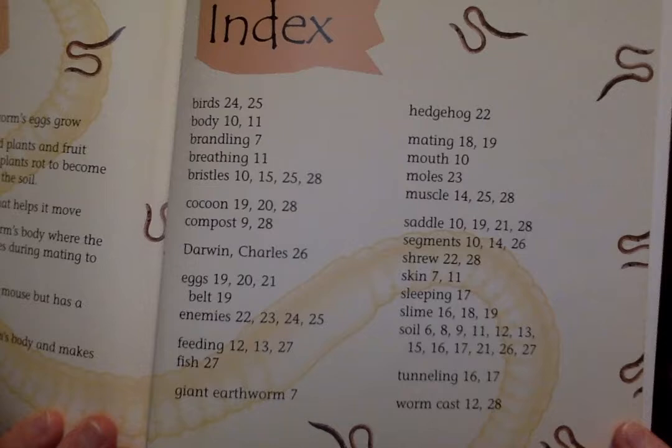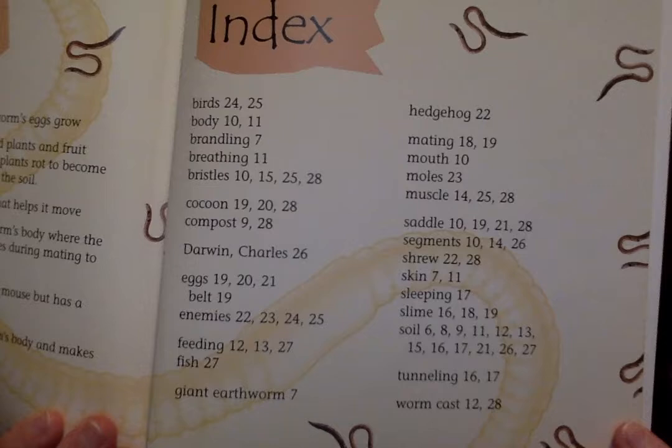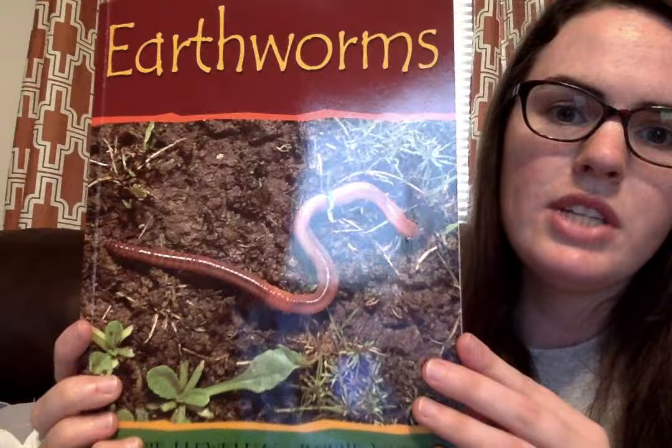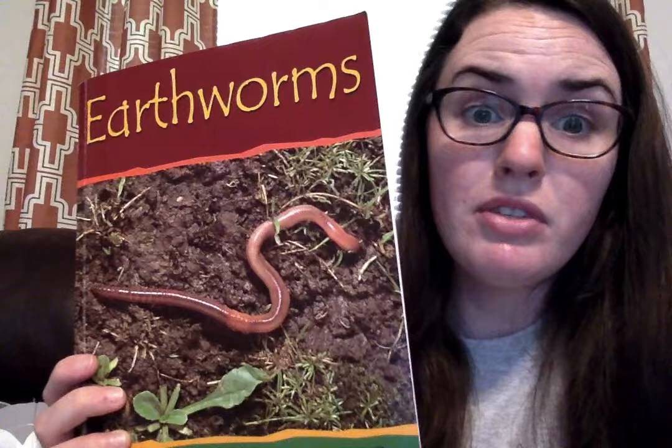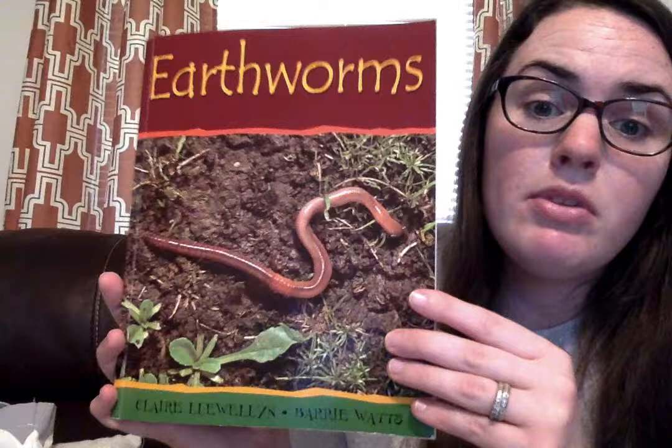Let's see if we can find another diagram. And let's look in the back to see if this one has an index and a glossary like the other one. It does! It has a glossary that gives definitions and an index that gives page numbers where you can find information on all these topics. That one had even more text features than the other book — I think that one had six text features altogether. That's what makes nonfiction books different from fiction books. Let's read a few pages out of the book Earthworms.